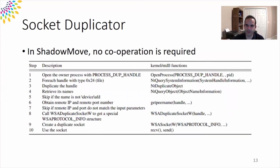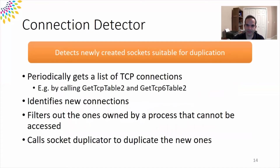ShadowMove's Socket Duplicator duplicates a socket from an owner process without its cooperation. On Windows, it takes the following 10 steps to duplicate a socket from a process running under the same privilege as the ShadowMove process. To detect new connections, the Connection Detector periodically gets a list of established TCP connections and compares it with the most recent list. It then filters out new connections owned by processes that cannot be accessed by ShadowMove due to lack of privilege. Next, it calls the Socket Duplicator to duplicate the sockets corresponding to the new connections.